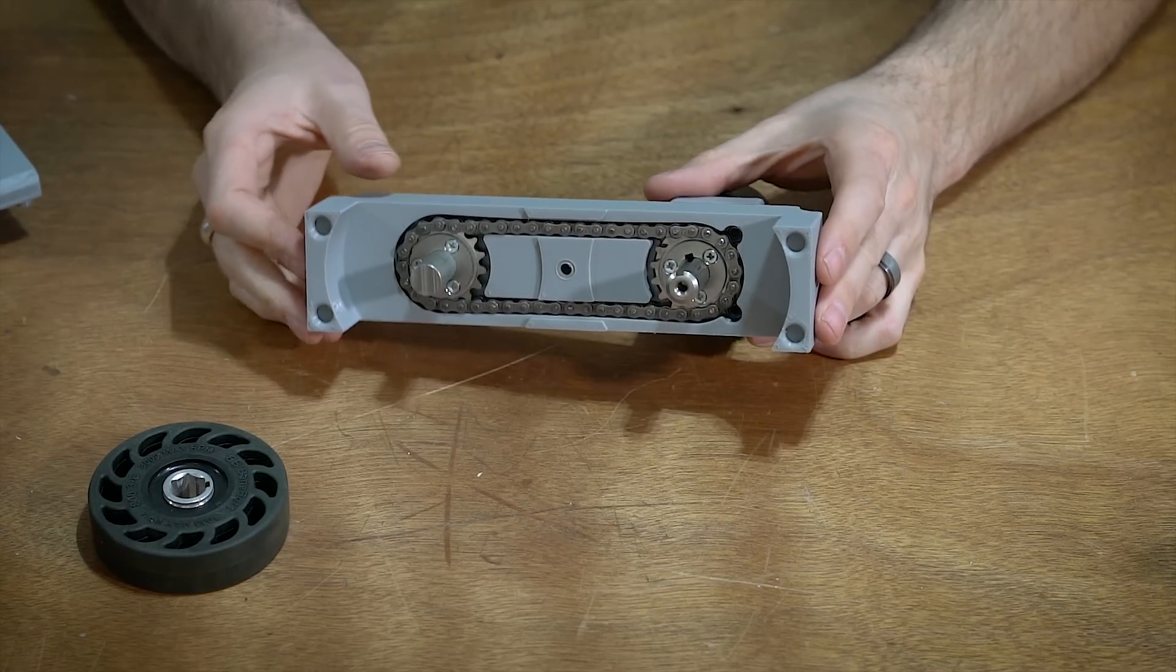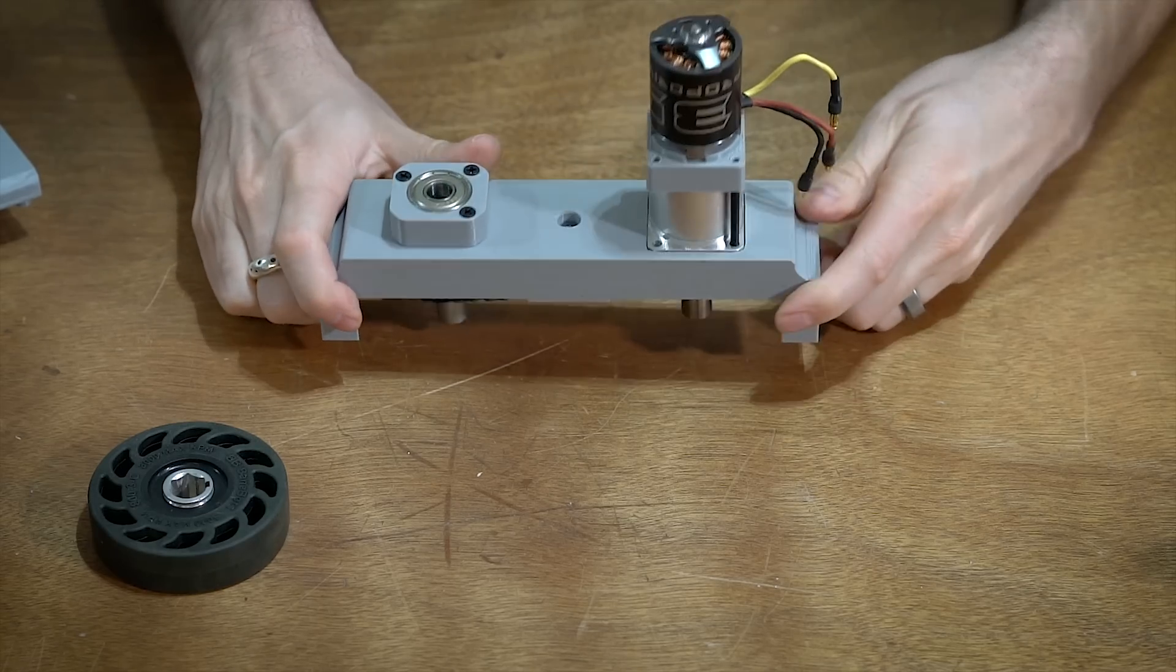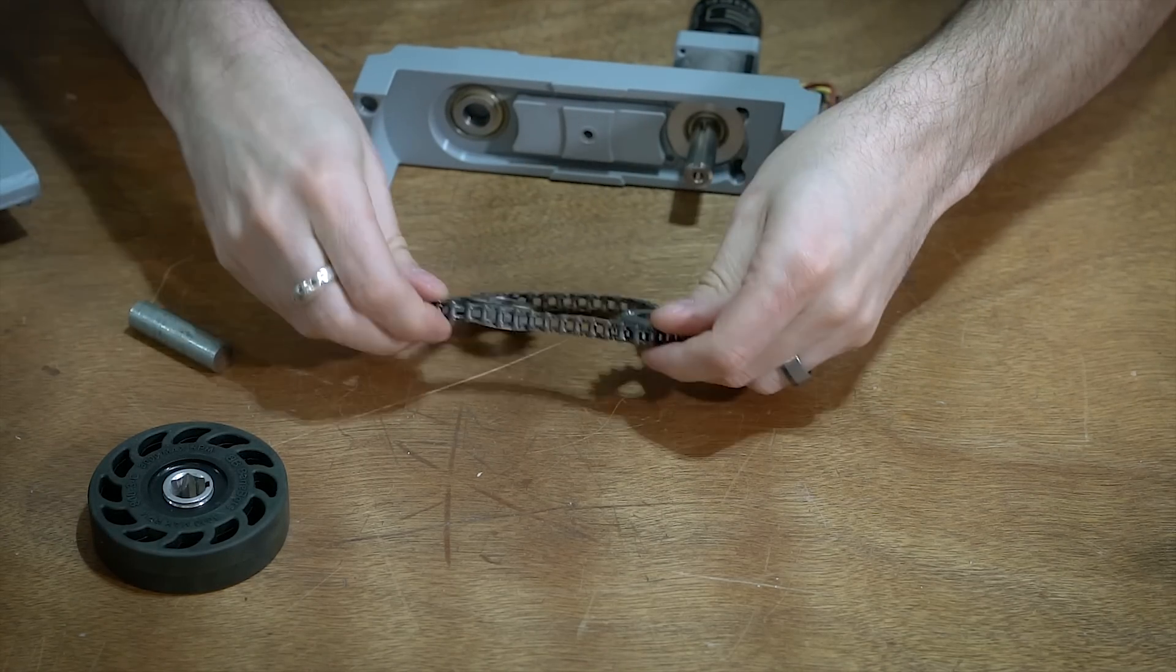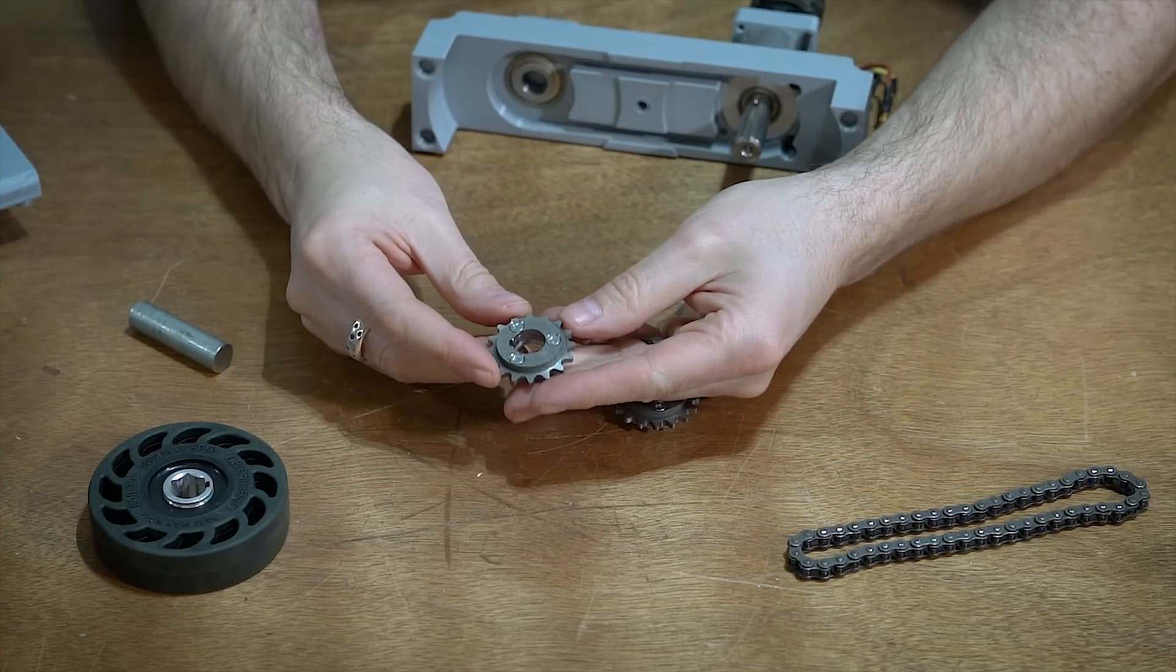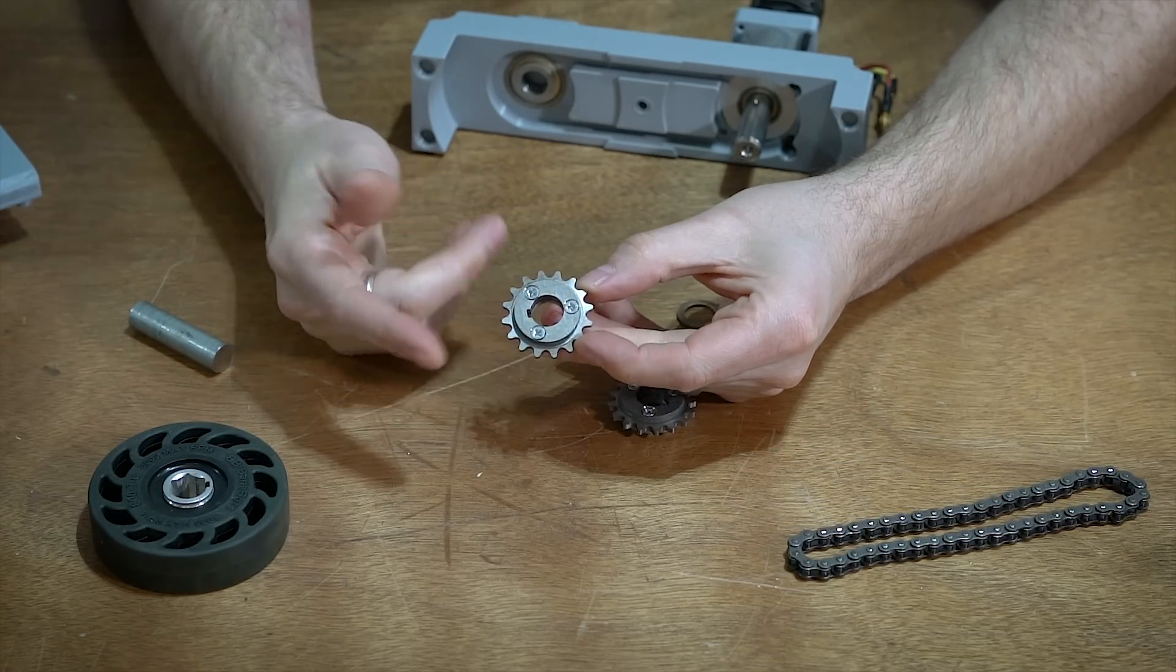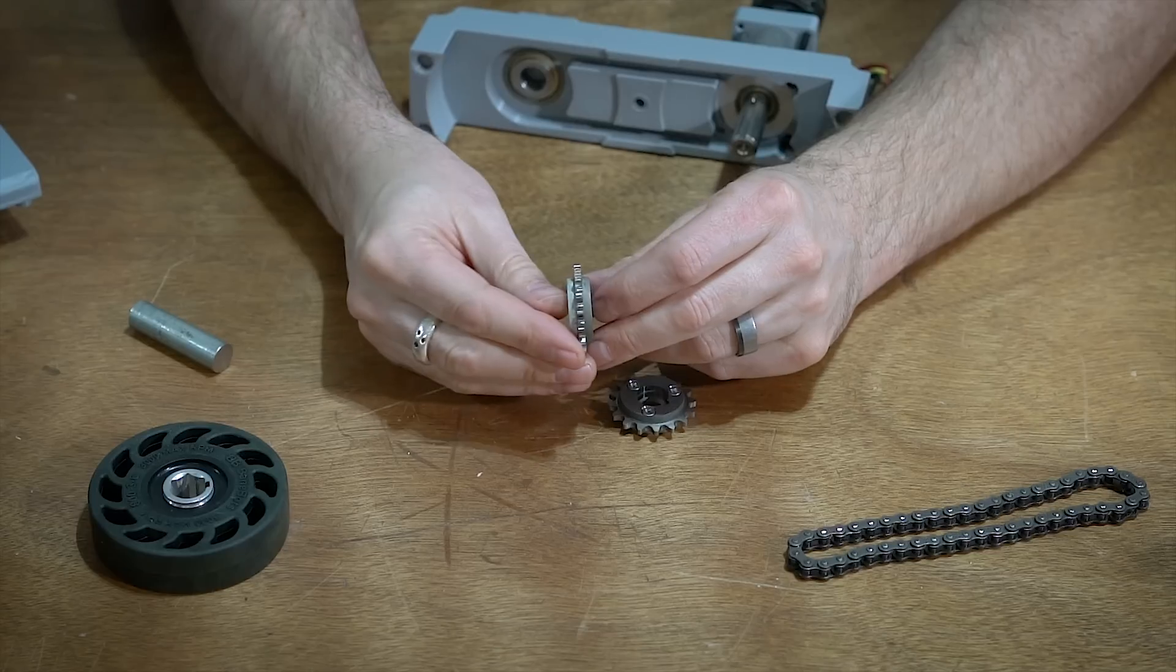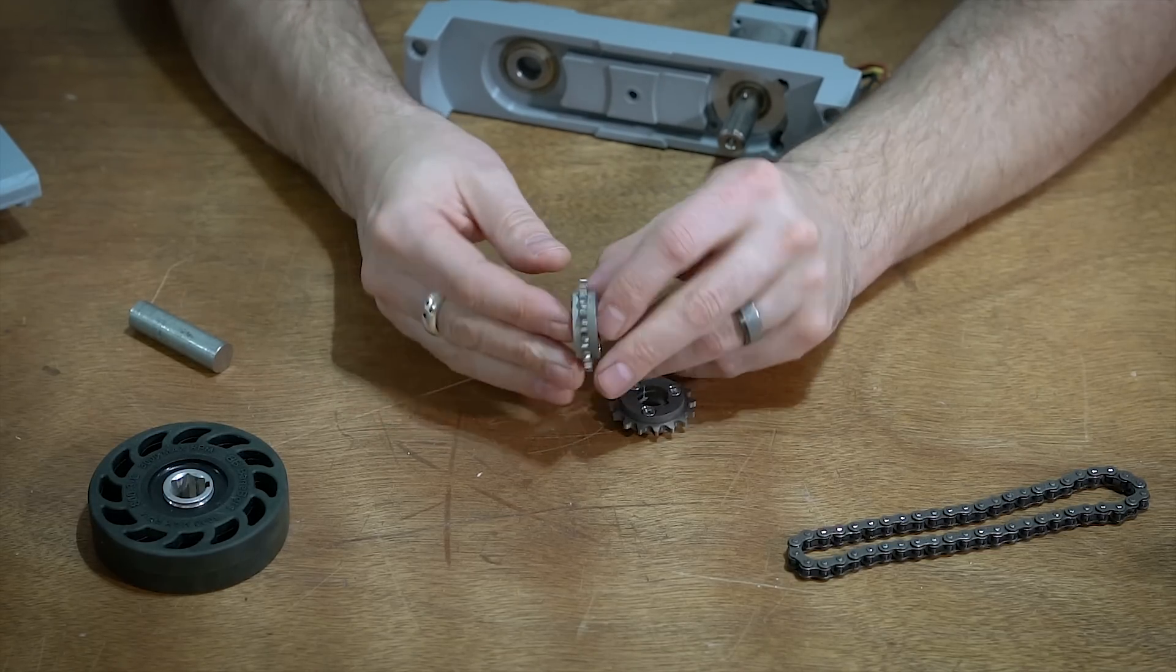And I guess I should also mention that I have bearings pressed into all of this. So if I take out that chain, I guess we'll get a quick look at these custom sprockets. So these kind of started out life with Ectobotics from Servo City, and I kind of made modifications. Now there's something completely different.